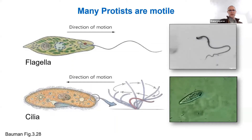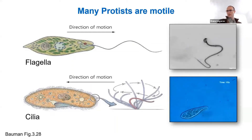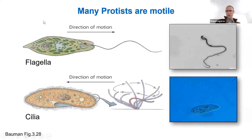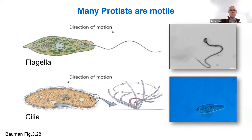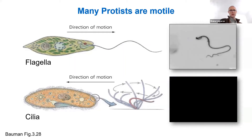So cilia and flagella are structures for motility. Most of these protists have one or the other, and it helps them move around and helps them be pathogenic and move to different body tissues.